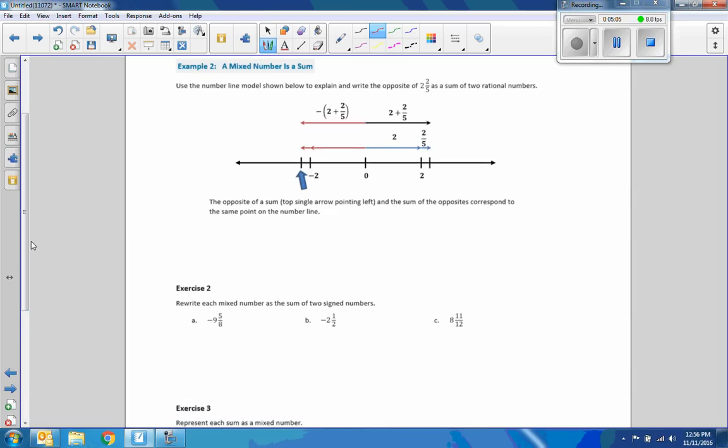In example 2, a mixed number is a sum. Use the number line model shown below to explain and write the opposite of 2 and 2 fifths as a sum of two rational numbers. The opposite of a sum, top single arrow pointing left, and the sum of the opposites correspond to the same point on the number line. So what they're saying is negative 2 and 2 fifths this way, and 2 and 2 fifths this way. This red arrow is the same length as this black arrow. Distances are equal, just go in opposite directions.